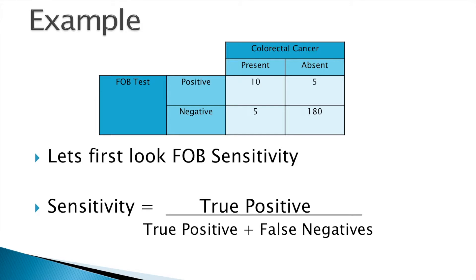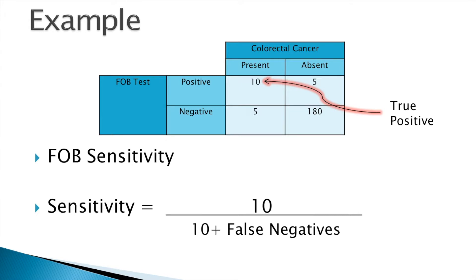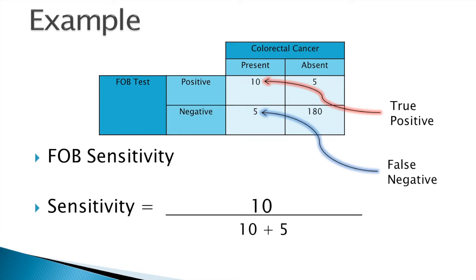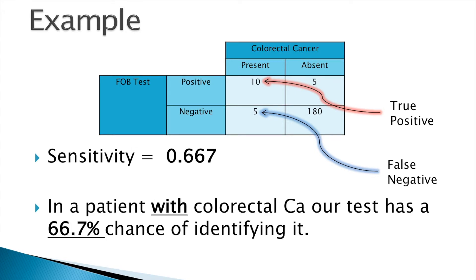We already know that sensitivity is equal to the true positives divided by the true positives plus false negatives. We identify the true positives — 10 patients — and the false negatives — 5 patients — giving us the equation 10 divided by 10 plus 5. This gives us a sensitivity value of 0.667, which means that when a patient has colorectal cancer, our test has a 66.7% chance of identifying it.